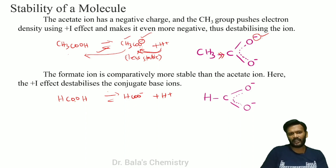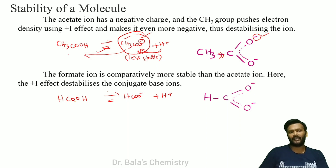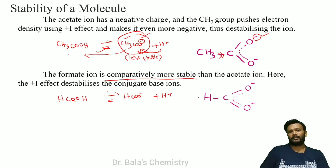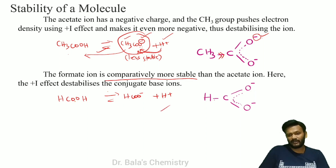The formate ion is more stable because formic acid has no alkyl group pushing electrons. With less plus I effect, the negative charge on the formate ion is more stable. Ion stability is greater, and that's why H⁺ can leave more easily.